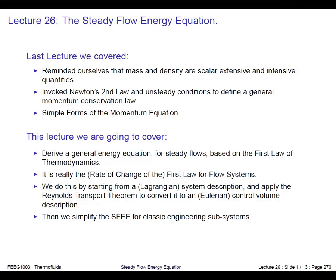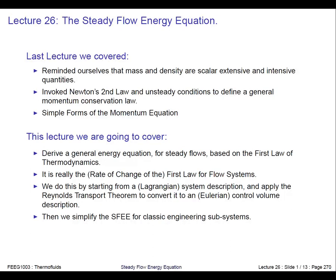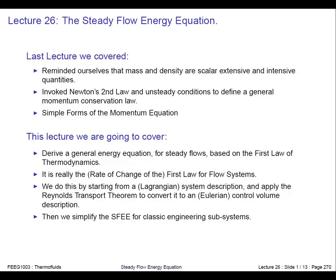We're going to make use of the first law for flow systems. This was where we used it for internal combustion engines, and we assumed a system — a fixed mass, with no mass and momentum transfer in or out. It's going to be slightly different because the first law was an energy conservation law, whereas we are interested in the rate of change of energy — effectively the time derivative of the first law. We need to get from the Lagrangian system point of view to an Eulerian control volume point of view, and we're going to make use of the Reynolds Transport Theorem. The other thing we need to add to the first law is convection of energy.